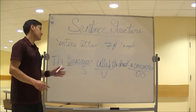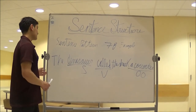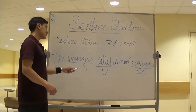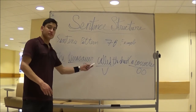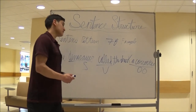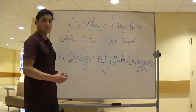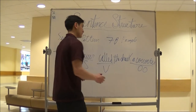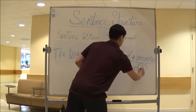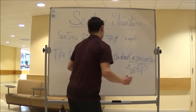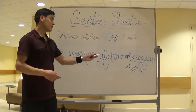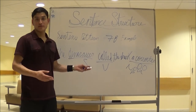Sentence pattern 7b. The example is: the dinosaur is called a coworker. The dinosaur is the subject, 'called' is the verb, and a coworker is the direct object, which also works as a noun phrase. Because a coworker is a person, it's a noun phrase.